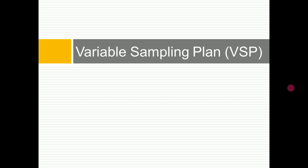In the Attribute Sampling Plan, we covered the single type, the double type, the triple as an assignment, and then the sequential. For the variable sampling plan, we will cover only two: the single case and the sequential case. In this chapter, we are going to see how to design an acceptance plan whenever we have a quality characteristic of interest which has a continuous distribution.